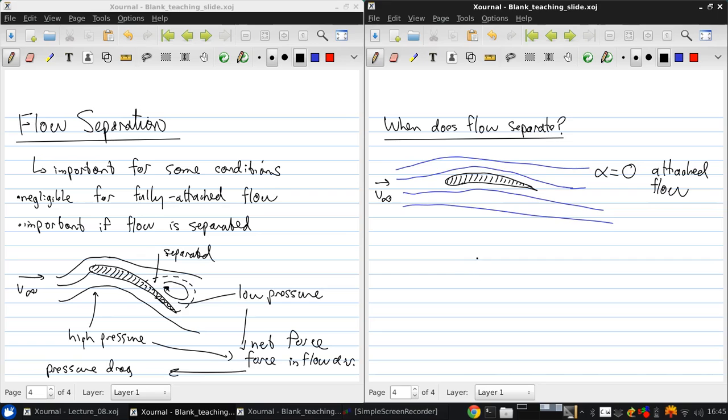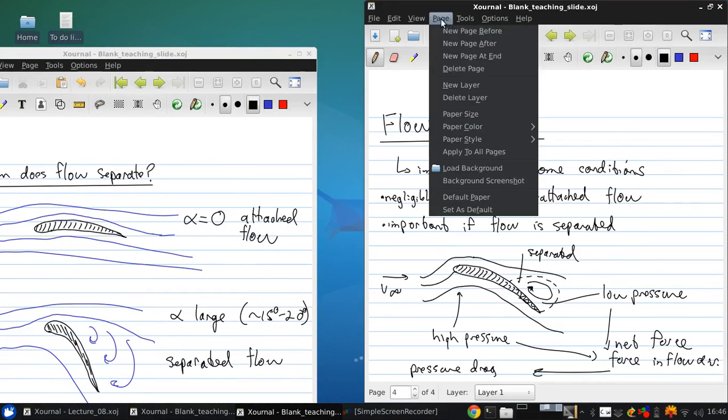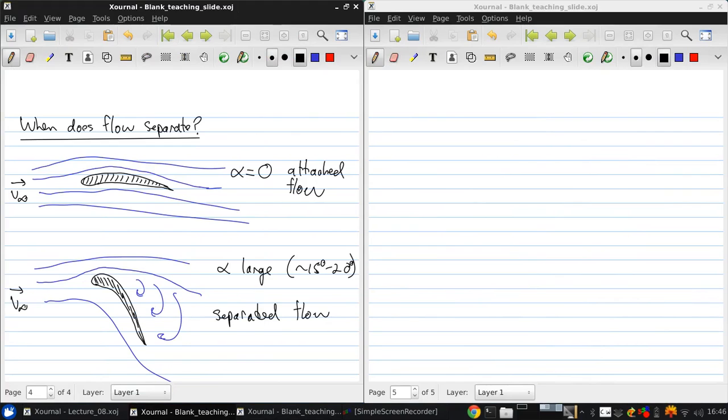Now consider the same airfoil at a high angle of attack. We have v-infinity here, but now if I draw streamlines, the streamlines would deflect up and over, but it won't come all the way back down. We'll have a region of separated flow. This is for alpha, so usually separation might happen in the range of 15 to 20 degrees, but that's highly dependent on the airfoil.